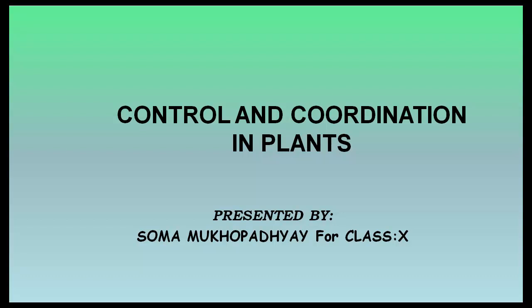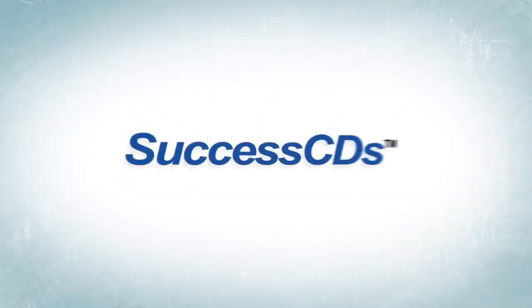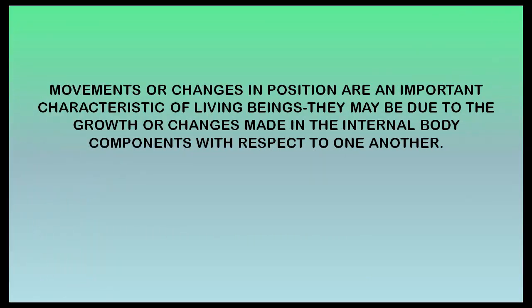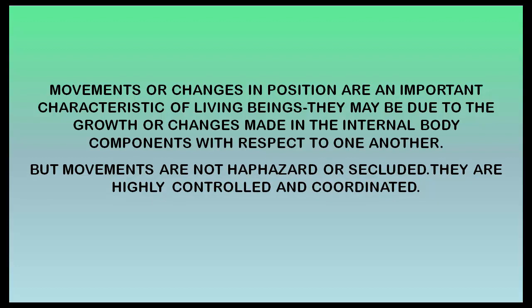You must have noticed that plants show well-coordinated and controlled movements in spite of the fact that they do not have nerves or muscles. Movements or changes in position are an important characteristic of living beings. They may be due to growth or changes made in the internal body components with respect to one another. But movements are not haphazard or secluded — they are highly controlled and coordinated.